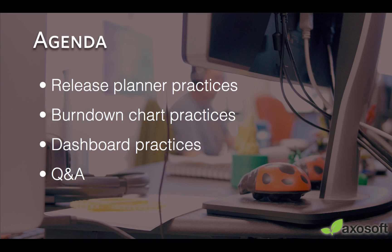I'm going to touch on the Release Planner, as mentioned, and also on burndown charts. What is the burndown chart made of? What are some situations you might run into and why might they be happening? How can I use that data to present it to my stakeholders, my customers, and my team? And how can I put that into a dashboard that tells a story about how we are doing? The way I'll be conducting this webinar is around 10 questions that I'll use to preface each section.